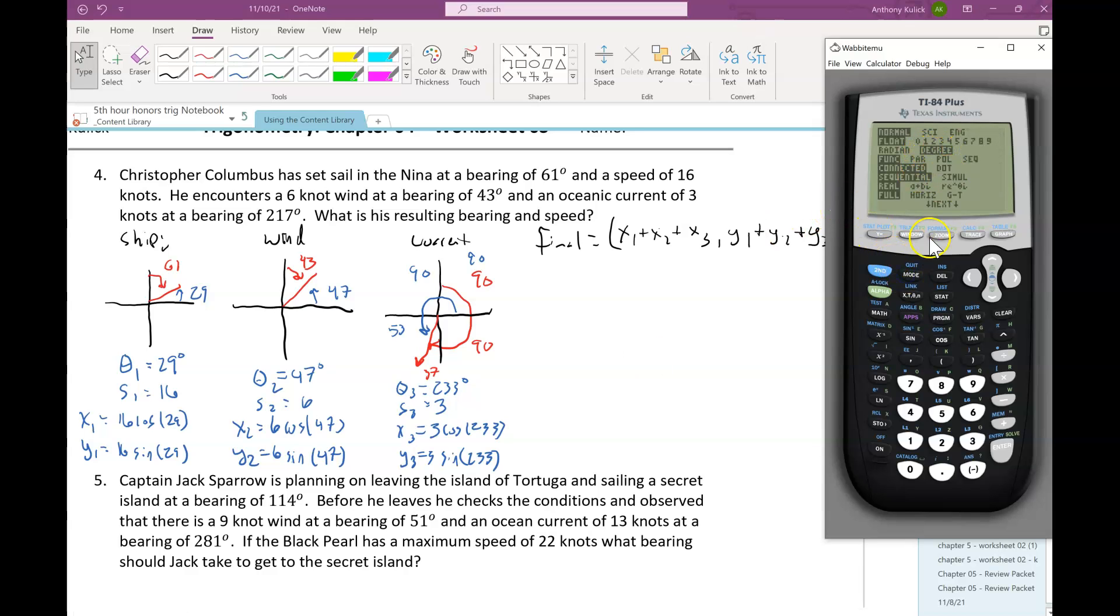I want to make sure I'm in degree mode since all of my angle measures are measured in degree. So 16 cosine 29 plus 6 cosine 47 and then 3 cosine 233. So my x-coordinate is like 16.28, and then the y-coordinate is going to be the same thing but with sines.